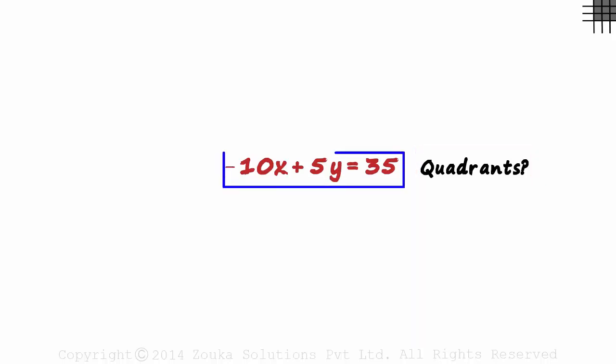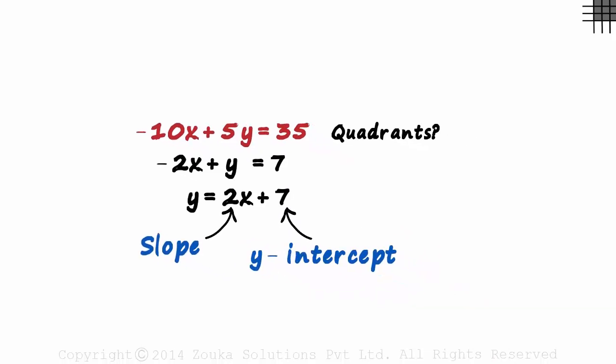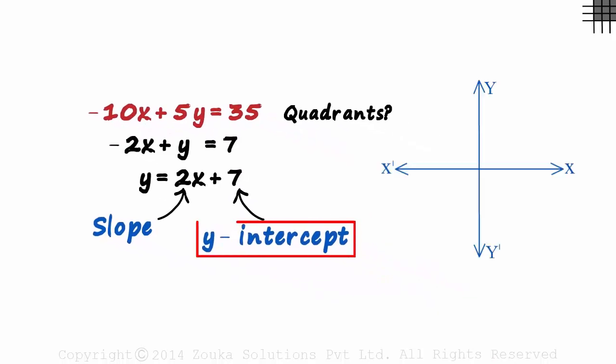The best way would be to write this equation in the slope-intercept form. Rearranging the terms, we write it as y is equal to 2x plus 7. 2 is the slope and 7 is the y-intercept of this line. Let's look at it on the coordinate plane. The y-intercept is 7. It will be somewhere here, 0 comma 7.